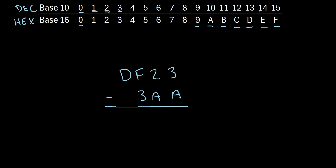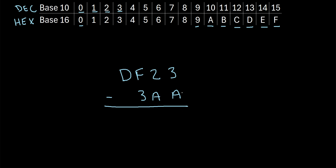So knowing this, let's see how we can perform some subtraction on hexadecimal numbers. Let's say we have DF23 minus 3AA. We'll start just like ordinary subtraction where we focus on the first column and say, what is 3 minus A? Remember, A in the hexadecimal system is really the same as 10. So we have 3 minus 10.